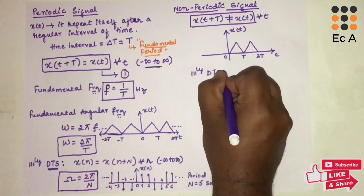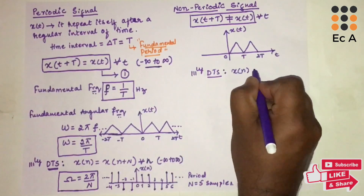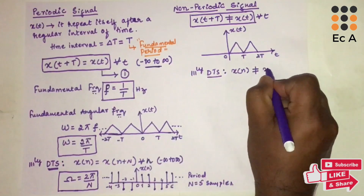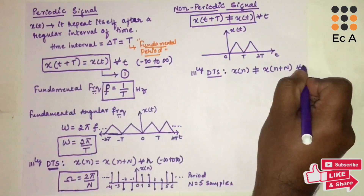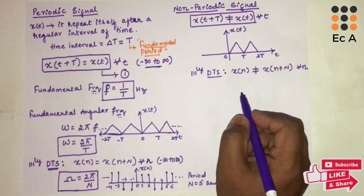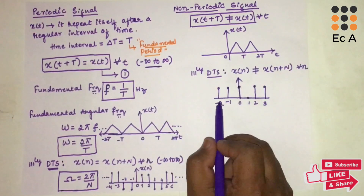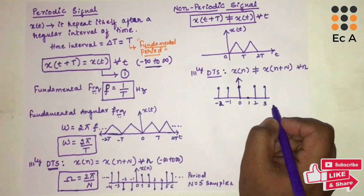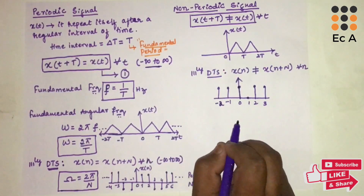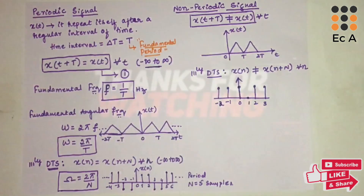Similarly, for a discrete time signal, if x of n is not equal to x of n plus N for all values of n, we call the signal non-periodic. You can see this signal is not repeating itself, so we call this discrete time signal non-periodic. This is all about periodic and non-periodic signals — hope you have understood the topic. Thank you.